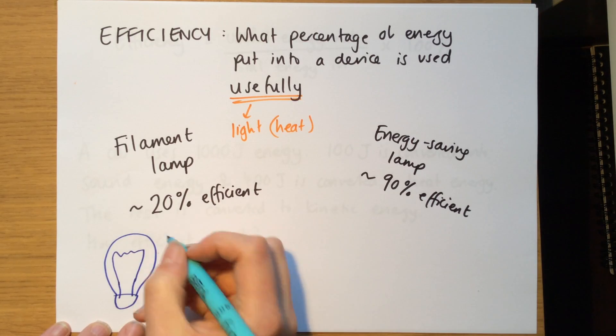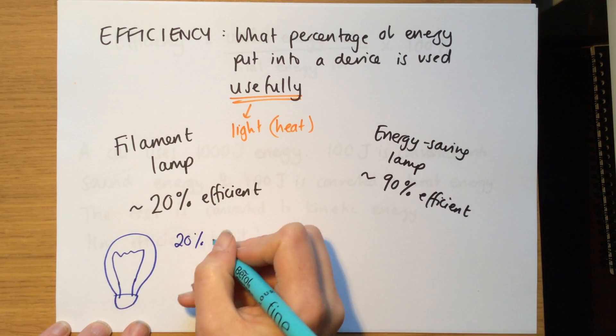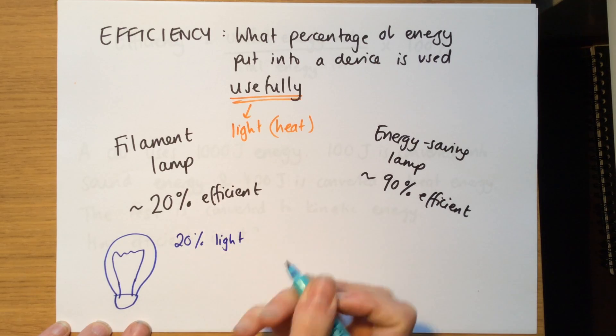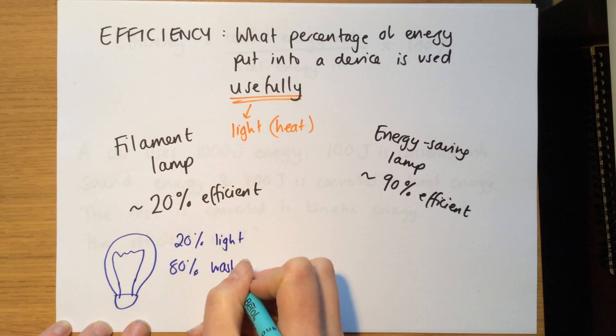They're about 20% efficient, and that means that 20% of the energy that goes in, the electrical energy that goes in, comes out as light. And the other 80%, because remember, percentages have to add up to 100, is wasted, and it's heat.